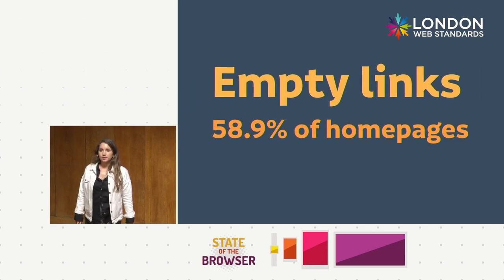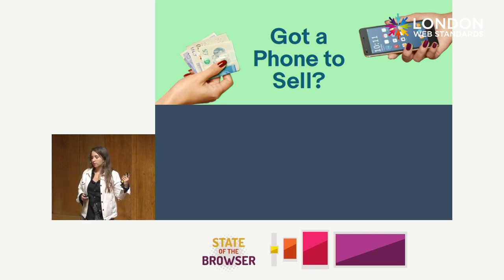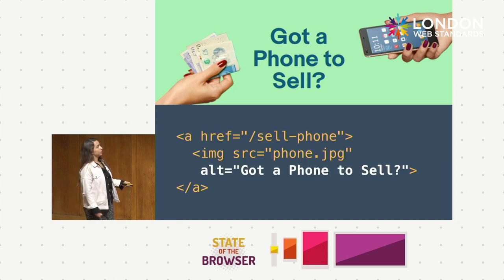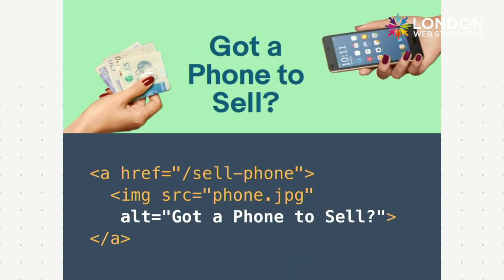Empty links are links that have no text inside them, often used for clickable areas — specifically clickable images. This is closely related to alternative text. If you have an image with text inside it and you wrap it in an anchor tag, you might think you're done — but you also need to add alternative text to that image so that people using assistive technology can actually read what the image says.